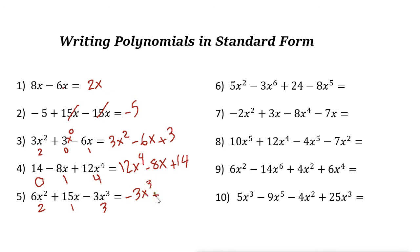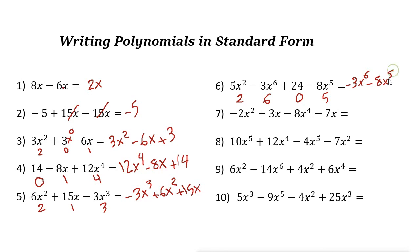Here the degrees are 2, 2, 6, 0, and 5. So 6 is the highest degree first: negative 3x to the power of 6. Then 5 is next: minus 8x to the power of 5. Then degree 2: plus 5x squared. Then degree 0: plus 24.